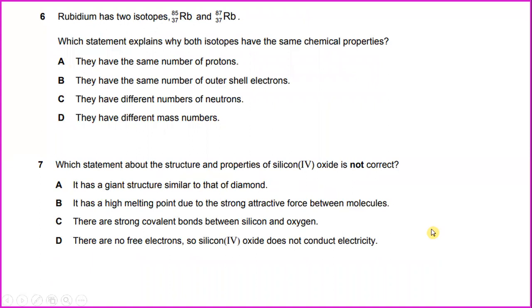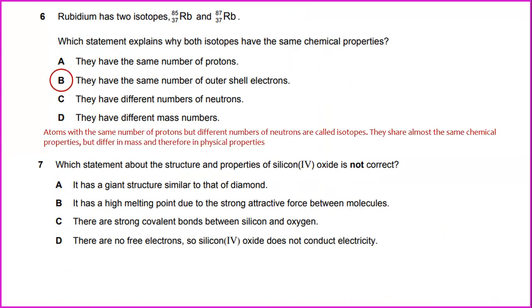Rubidium has two isotopes. Which statement explains why both isotopes have the same chemical properties? Atoms with the same number of protons but different number of neutrons are called isotopes. They share almost the same chemical properties but differ in mass and therefore in physical properties. The answer for number 6 will be B. Which statement about the structure and properties of silicon dioxide is not correct? It has a high melting point due to strong attractive force between molecules.